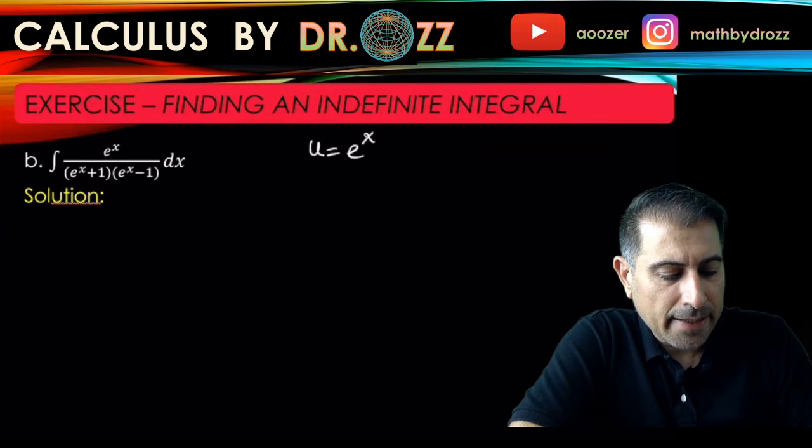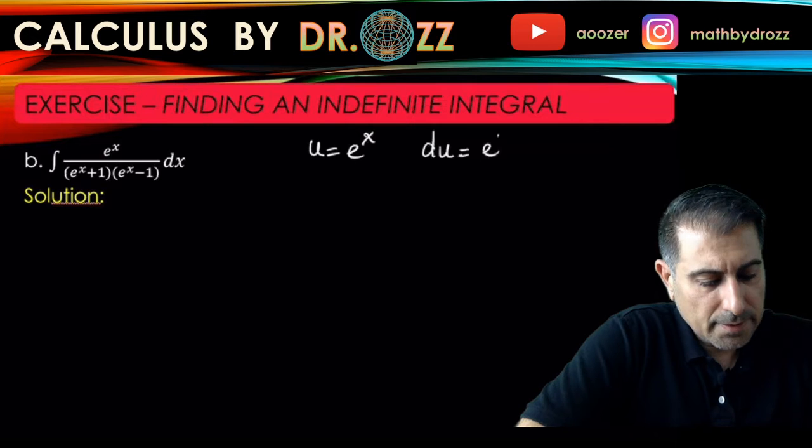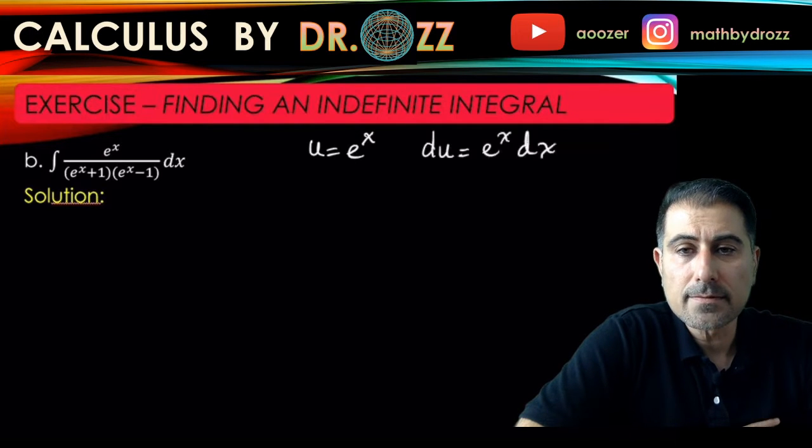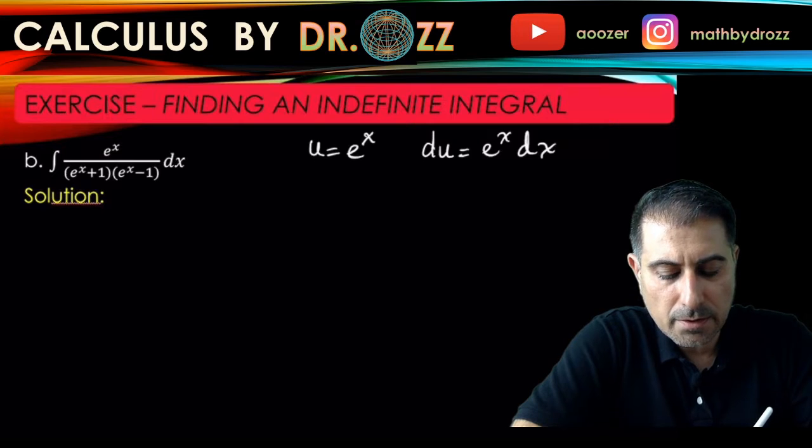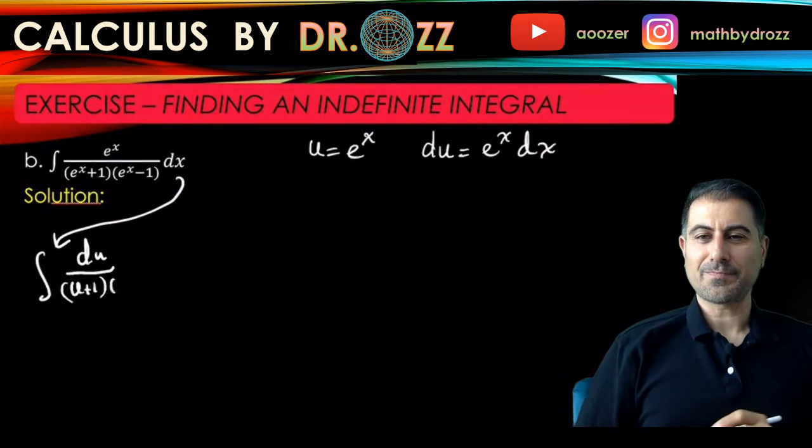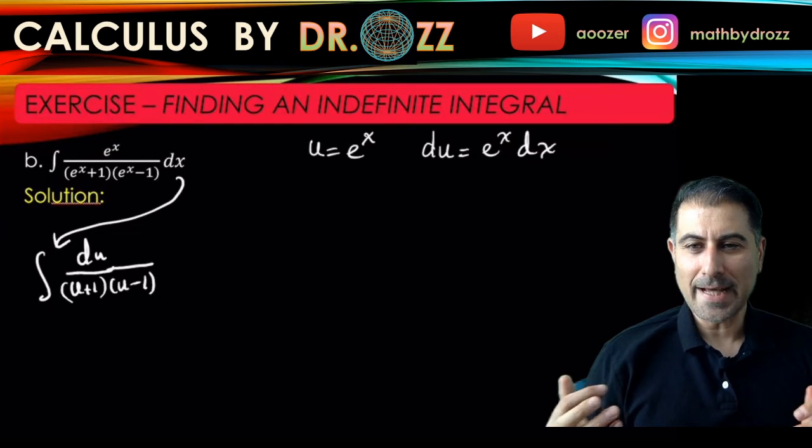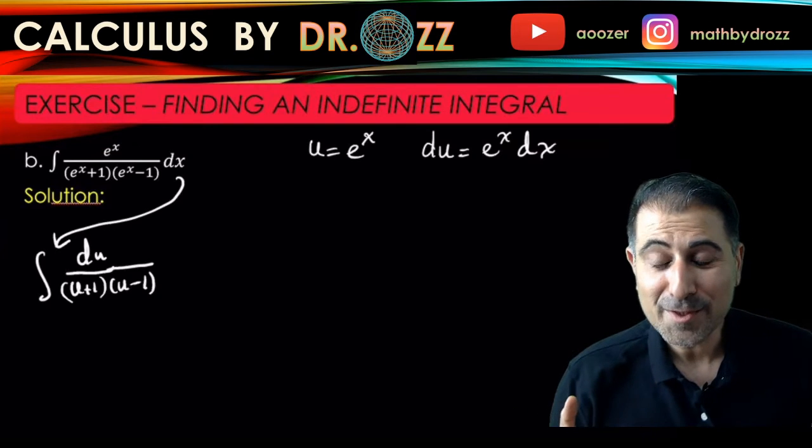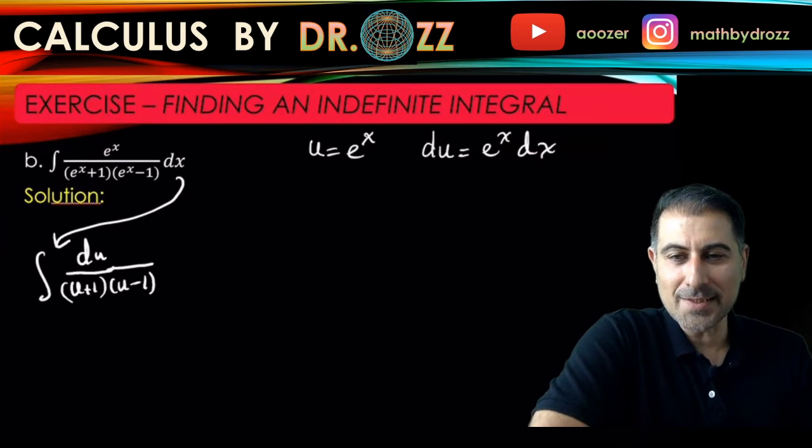So that du is e to the x dx. Alright, so then this integral turns out to be du over (u+1)(u-1). Here we go, this is one of the forms where you have the bottom already factored out, so all you're gonna do is apply the partial fraction business for this.